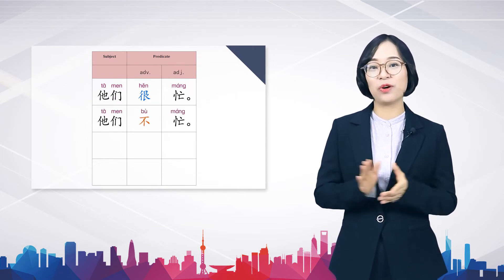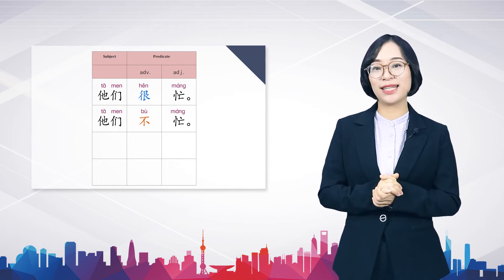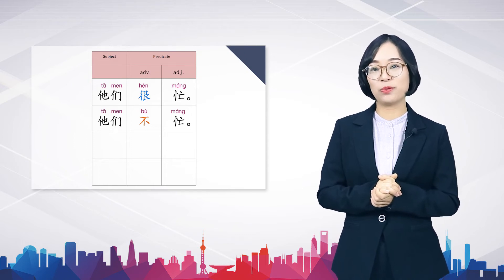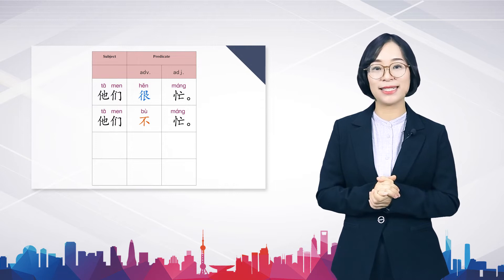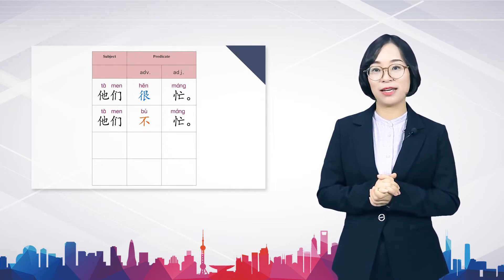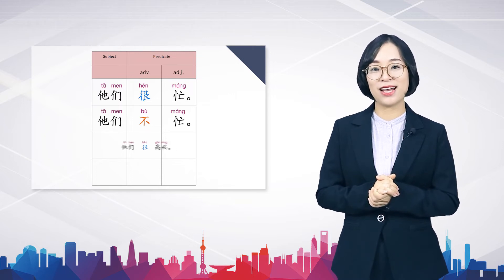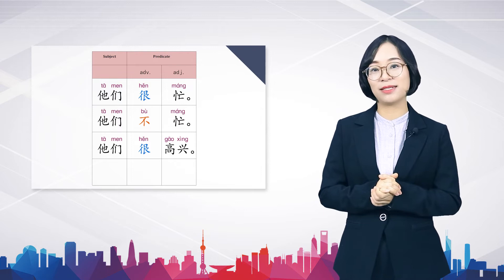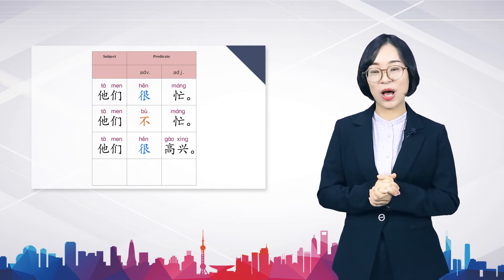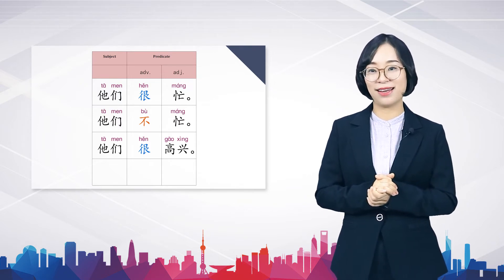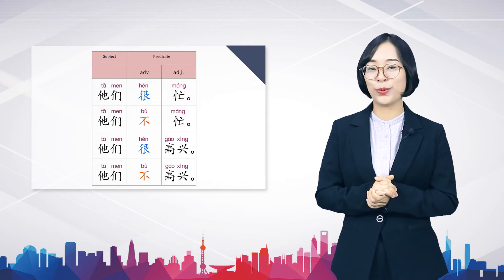We have learned sentences with an adjectival predicate such as 她们很忙。 The negative form is generated by placing the negative adverb 不 before the adjective that functions as the predicate. So the negative form of 她们很高兴 is 她们不高兴。